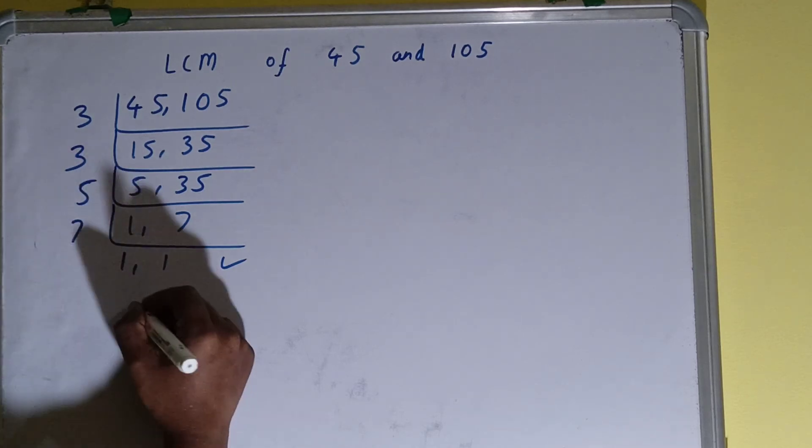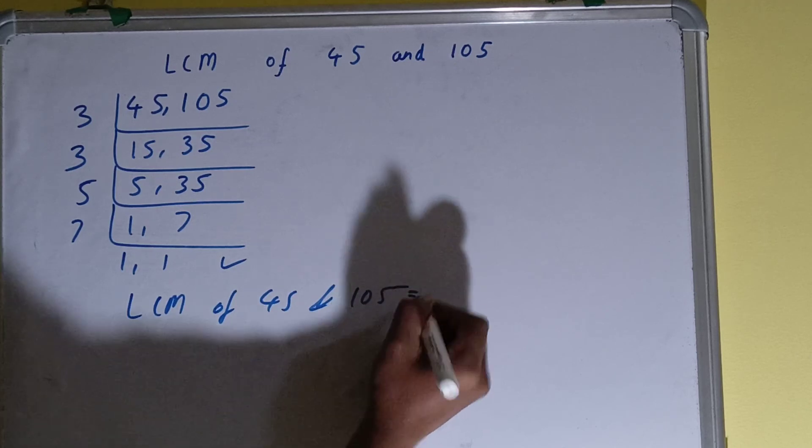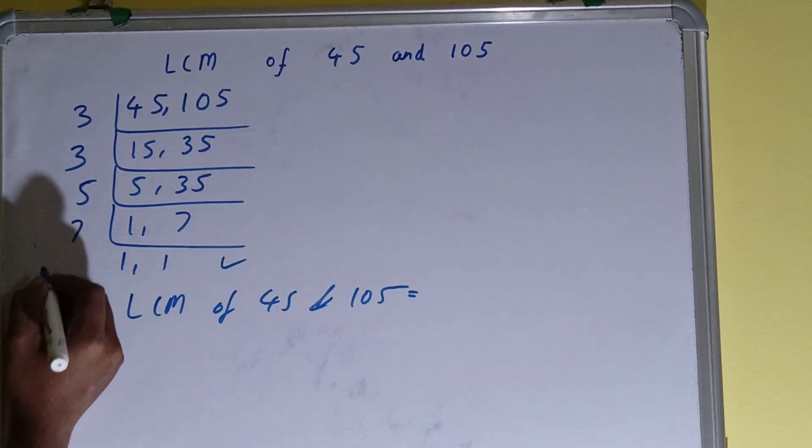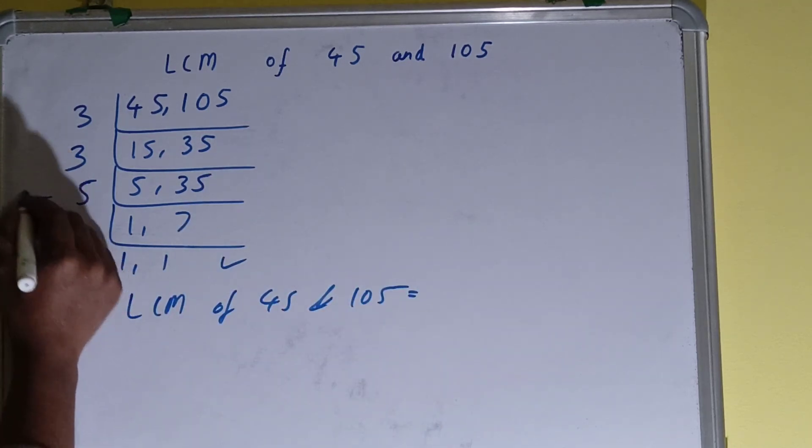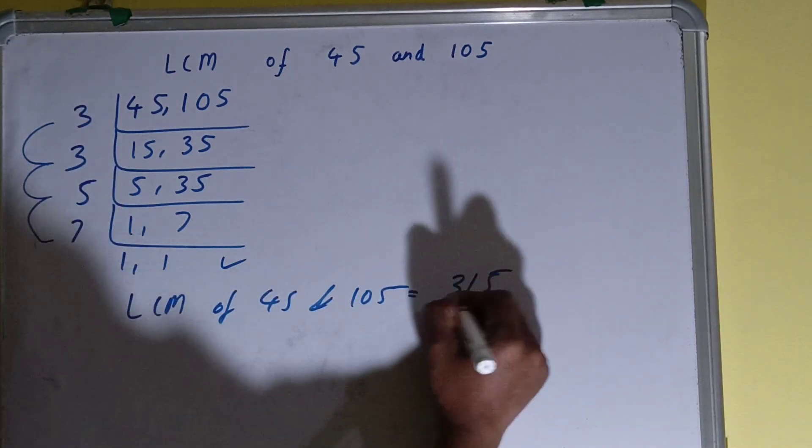That is, LCM of 45 and 105 is equal to multiply whatever you have on the left-hand side. That is, 3 times 3 times 5 times 7. So 3 times 5 is 15, 3 times 105 is 315. So the answer or the LCM will be 315.